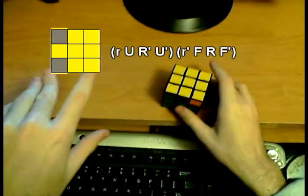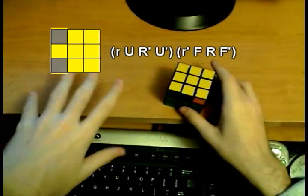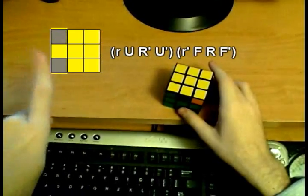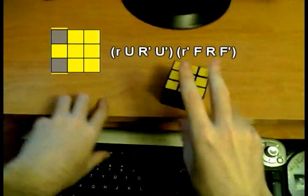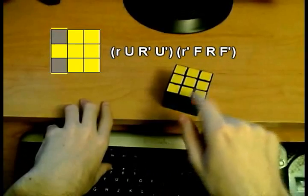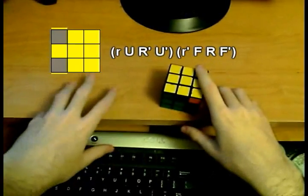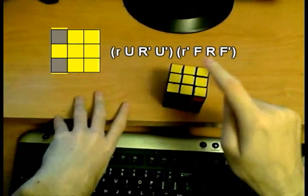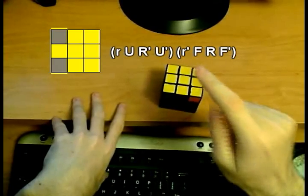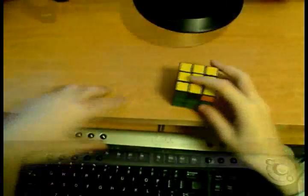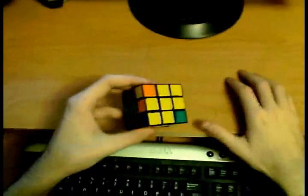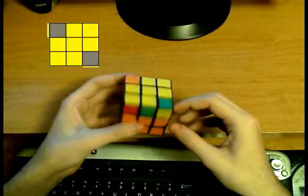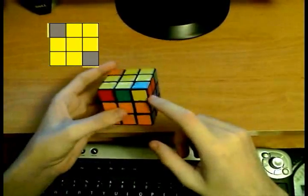This is very easy to remember. The first part is the R U R' U' trigger, which I've used a hundred times even in this video, but the first R is actually small r. And the second part is also a very famous trigger, the R' F R F' trigger, which you may already know, but also the first R' is small r'. So that's very easy.